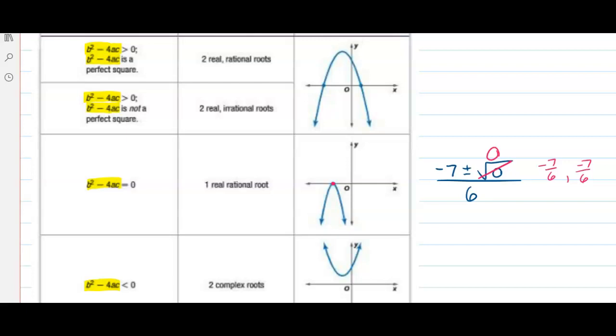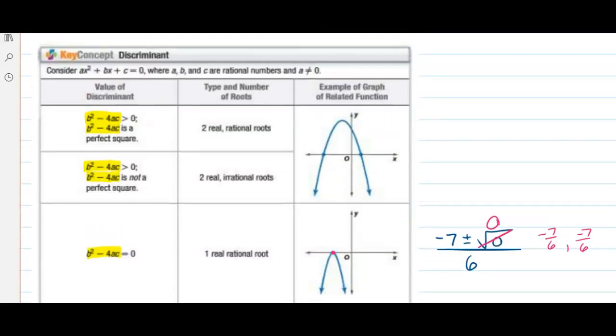Finally, the third thing to consider is when the discriminant is positive. If it is a perfect square, the number under the radical, when that is a perfect square, we get two real rational roots.